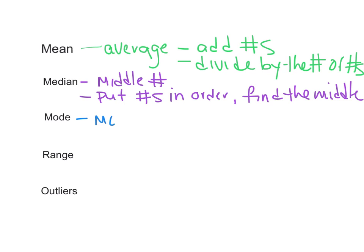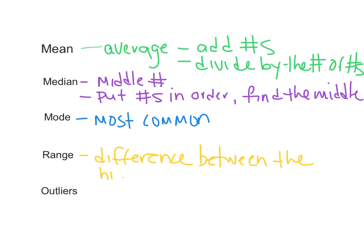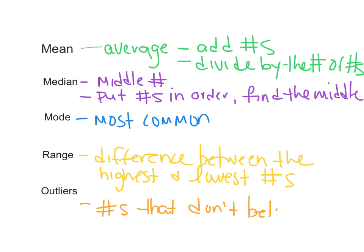Mode is the most common number. You just find the number that occurs the most often, and that's the mode. The range is the difference between the highest and lowest numbers. And then finally, the outliers are the numbers that don't belong — numbers that are way higher or lower than all the rest of the numbers.